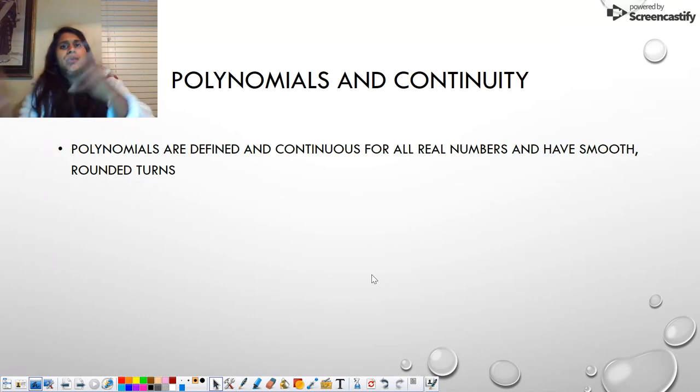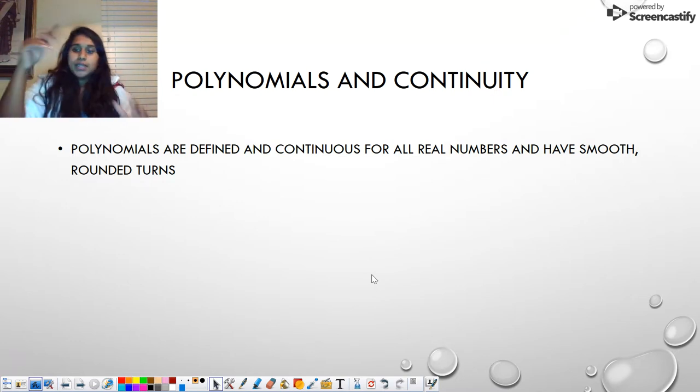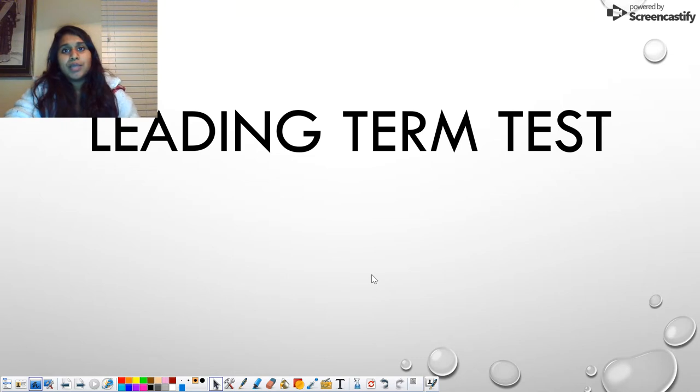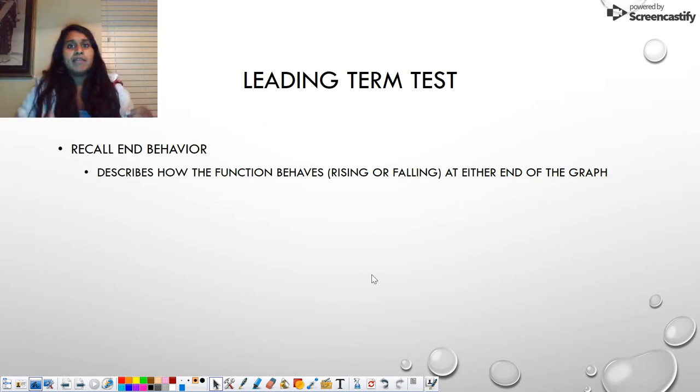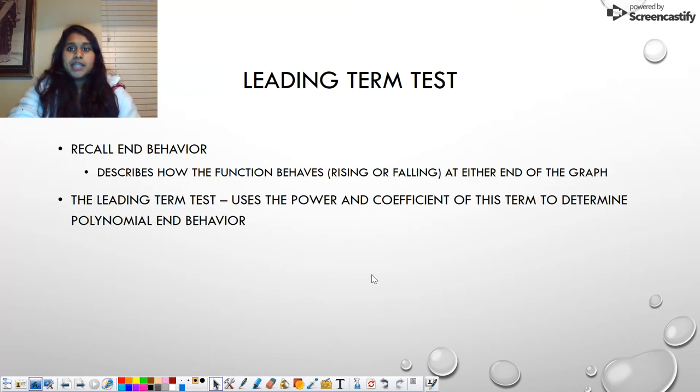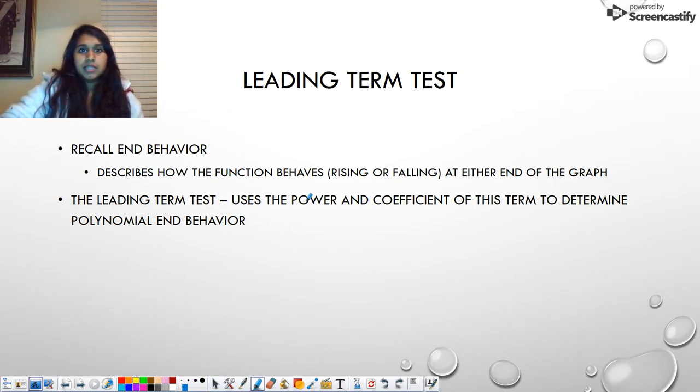But what about polynomials and continuity? We're just backtracking to concepts we've already covered in unit one. Polynomials are continuous, they are always continuous, always smooth lines, sometimes with rounded turns if you're talking about x squared and beyond. But the big thing we want to talk about, the new concept for pre-cal, is the leading term test. And all that tells me is end behavior. End behavior just tells me what's happening at the edges of the graph. We have two very distinct types, and we're going to separate them out as even and odd. In order to do the leading term test, we have to know two things: the power and the coefficient. But not any power and any coefficient. It has to be the leading power and the leading coefficient.